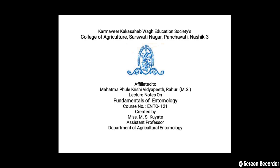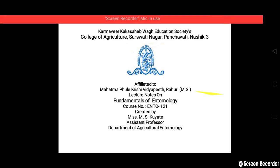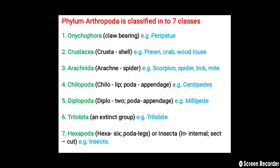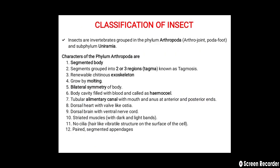The next definition is of insect. Insects are the tracheal arthropods in which the body is divided into the head, thorax, and abdomen, possessing two pairs of wings, three pairs of legs, and a single pair of antennae.